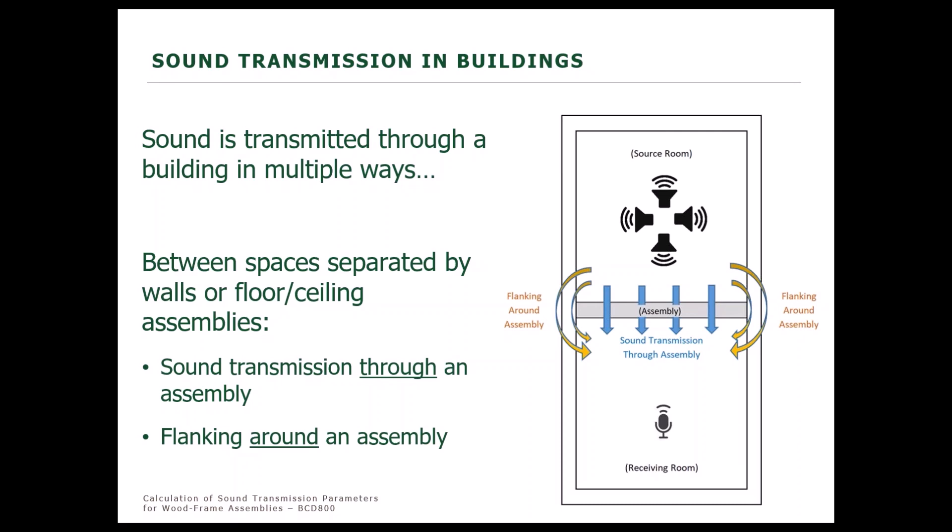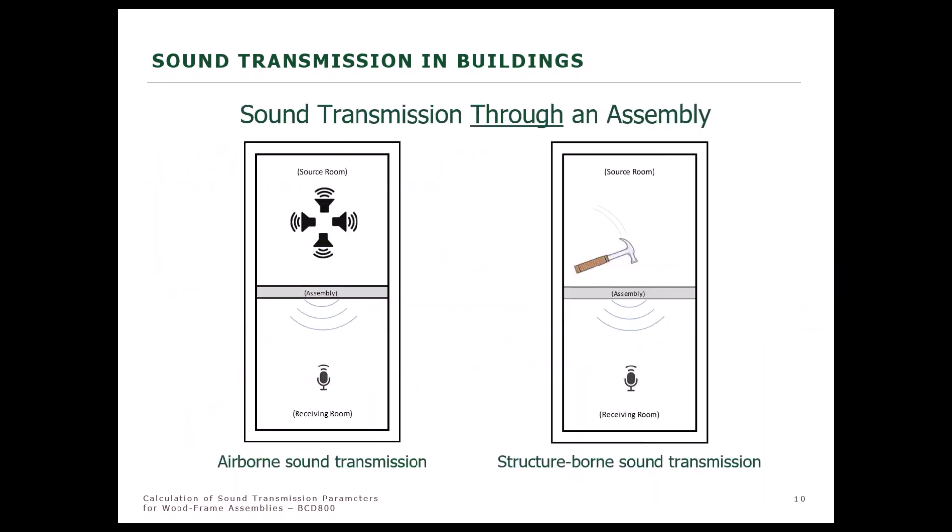Consider a hypothetical assembly carefully designed to minimize sound transmission — to maximize transmission loss for maximum privacy between dwelling areas. If there's an alternative path available which affords less resistance going around the assembly, the sound will be transmitted through that path instead. This flanking would effectively negate the special attention given to the design of that assembly. Flanking is very important in building acoustics and is typically addressed through other means besides assembly design, such as proper detailing and sealing at intersections between assemblies. Our discussion today focuses on sound transmission through an assembly, as addressed within the building codes.